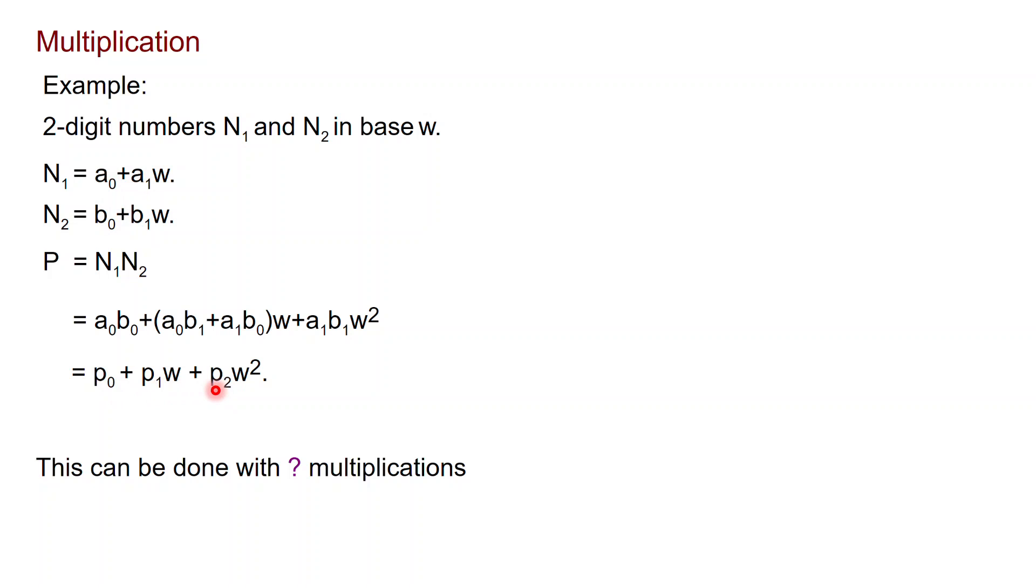And we can write this as P0 plus P1 W plus P2 W squared, where P0 is this, P1 is this, P2 is this. So our goal now is to compute P0, P1, and P2. So our input is A0, A1, B0, and B1, and we want to compute P0, P1, and P2.